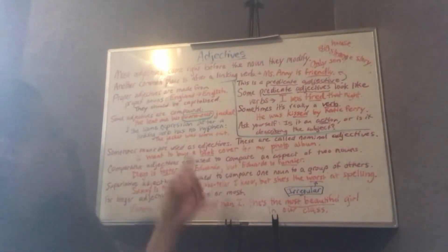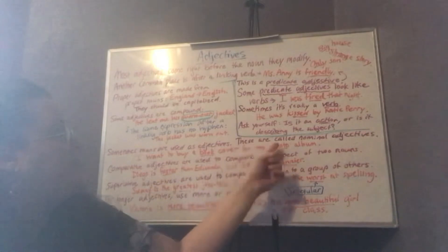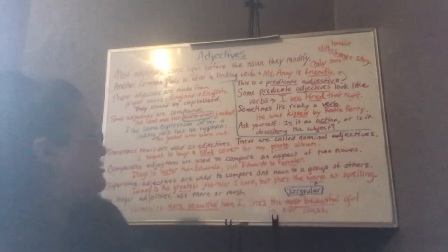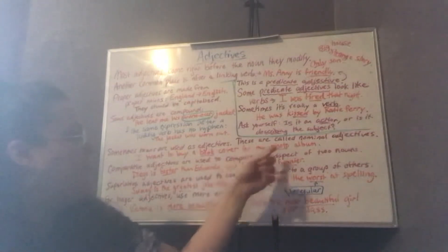Sometimes, nouns are used as adjectives. These are called nominal adjectives. For example, I want to buy a book cover for my photo album.